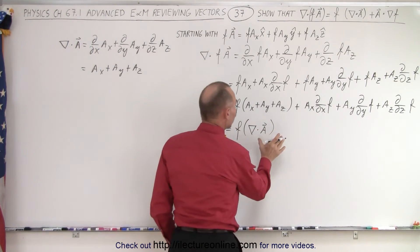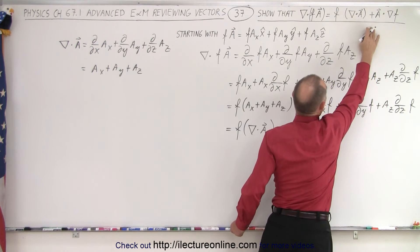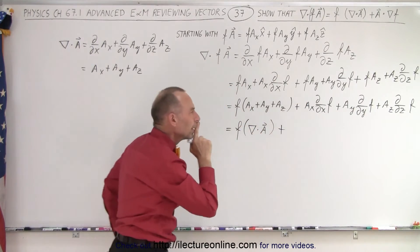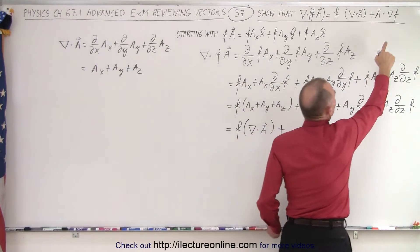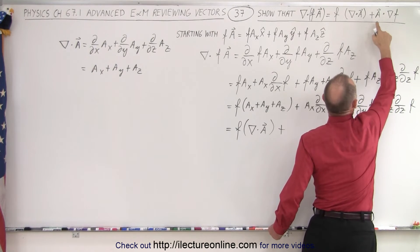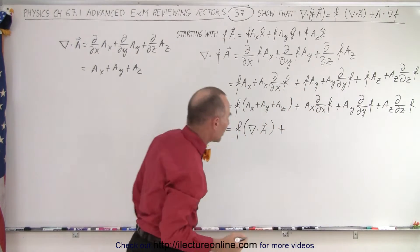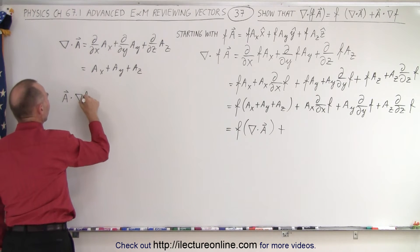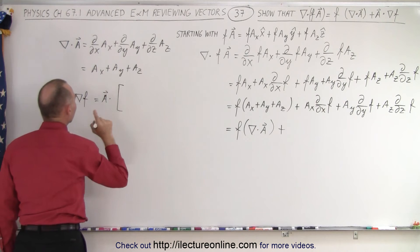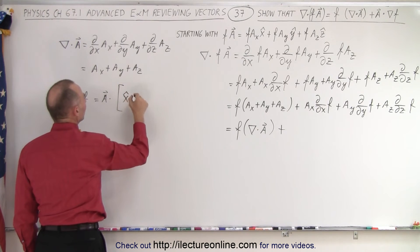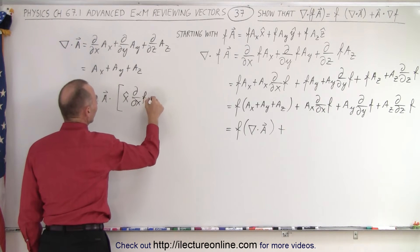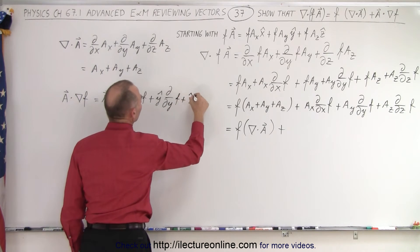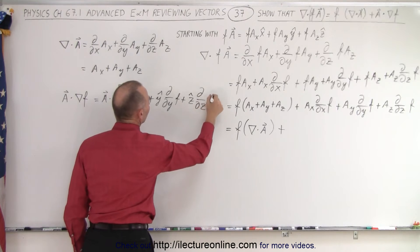Now, looking at the second part, this should equal the right side. Think about what the gradient of f looks like, and what happens when we take the dot product of vector A with the gradient of f. The gradient of f has the x component times the partial with respect to x of f, plus the y component times the partial with respect to y of f, plus the z component times the partial with respect to z of f.